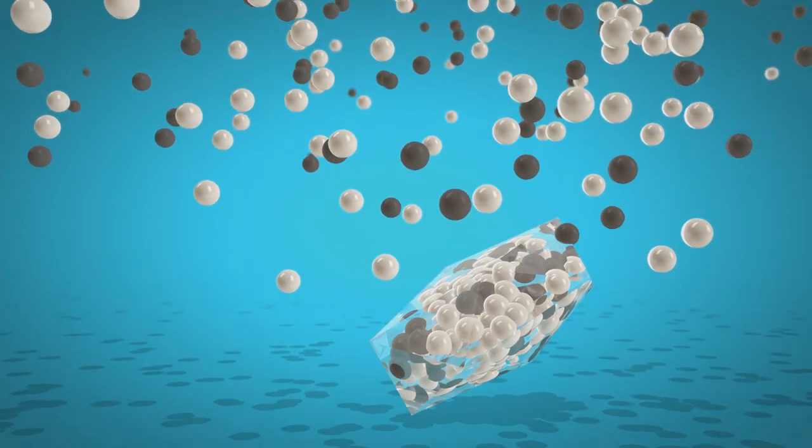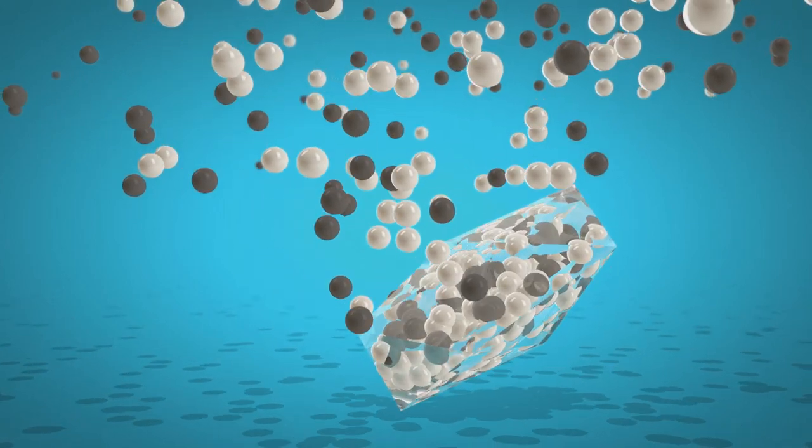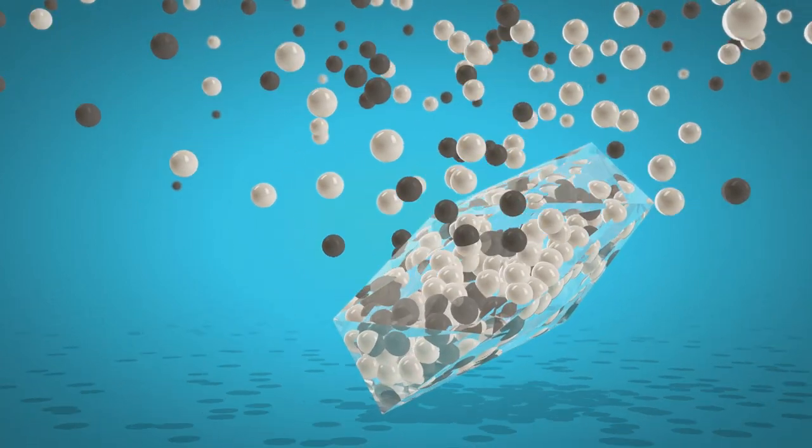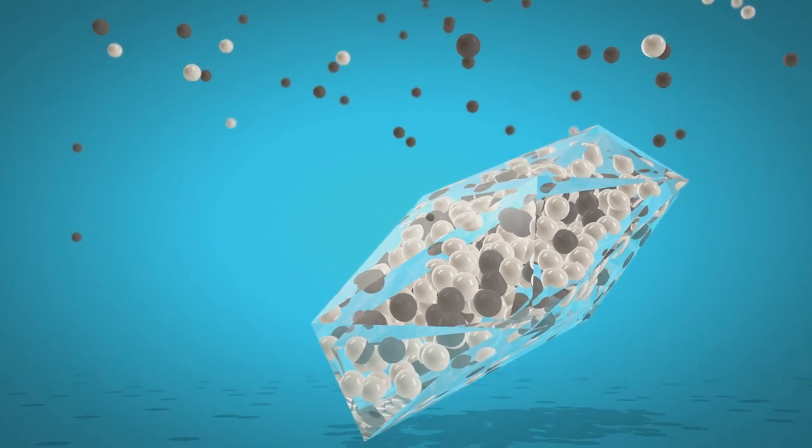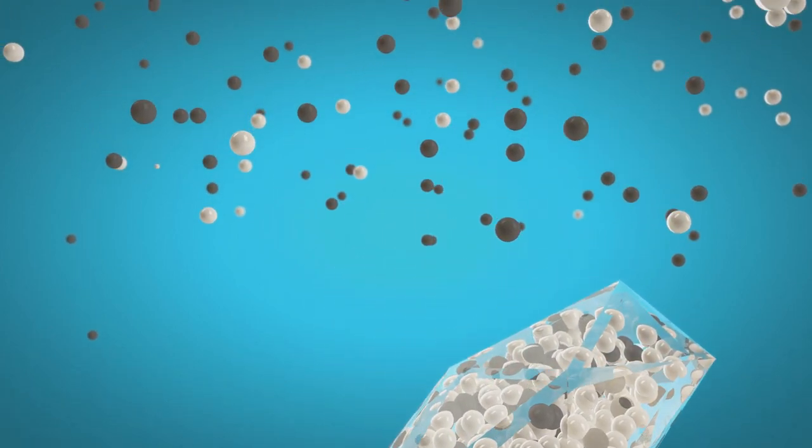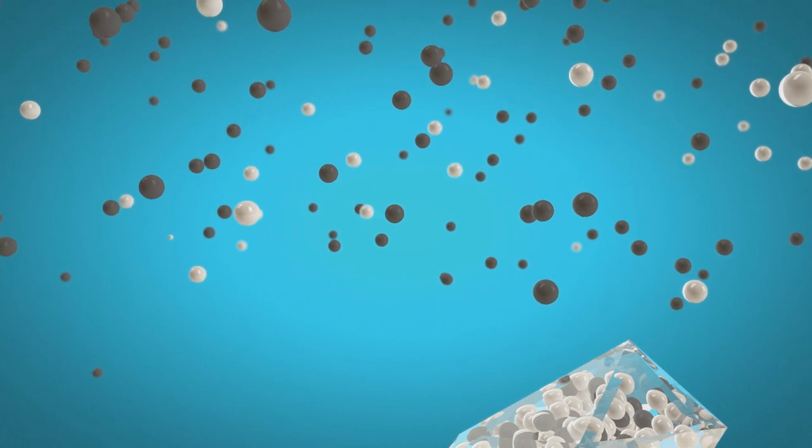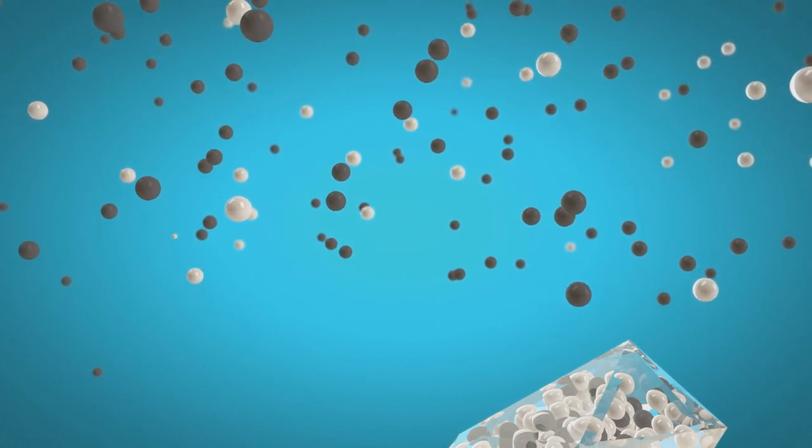If the solid grows rapidly, it preferentially incorporates the lighter isotopes. This is called the kinetic isotope effect. It's determined by the rate of precipitation of the solid. In the end, the liquid is left with more of the heavier isotopes, shown in black.